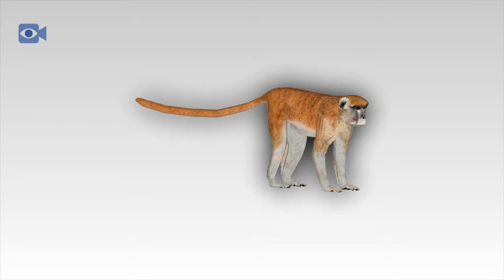Patas monkeys are able to reproduce at age 3 for females and between 4 and 5 years old for males. They have strict mating seasons which coincide with the winter months either from June to September or October to January depending on the geographic location. After a gestation period that lasts for around 5 months, a single infant is born that is nursed and cared for by its mother.